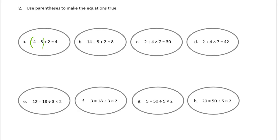So here's 14 minus 8. That's 6. 6 plus 2 is not 4. So that cannot be correct. So I'm going to put it around the 8 plus 2. The 8 plus 2 would be 10. And 14 minus 10 is 4. So that one works. Alright, let's try the 14 minus 8 first. 14 minus 8 is 6. And 6 plus 2 is 8. So good. That one works.